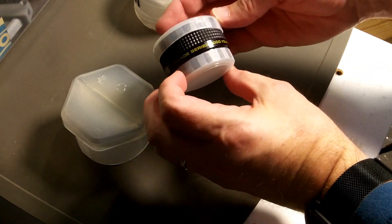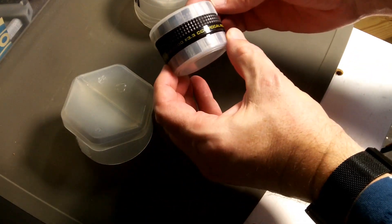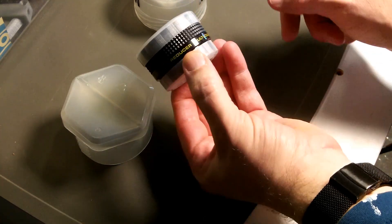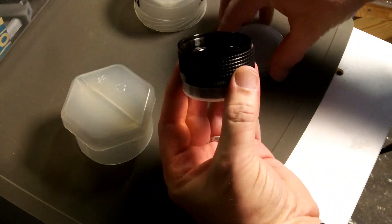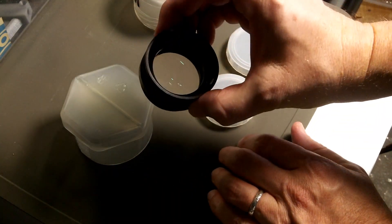This is a Meade 4000 series F3.3 CCD focal reducer. Essentially, you can think of it as a reverse Barlow.